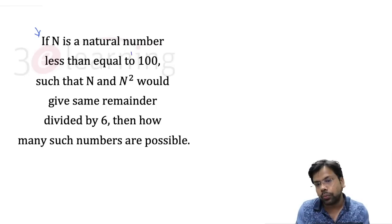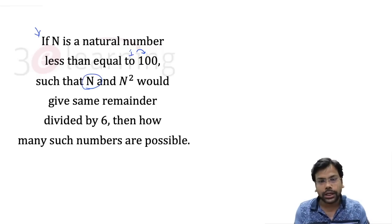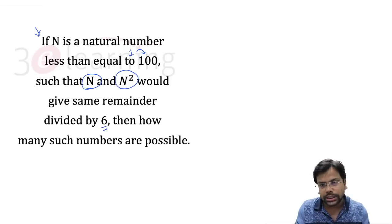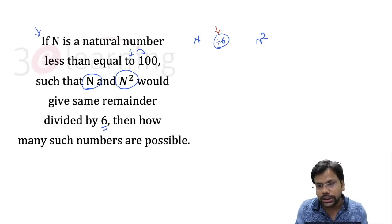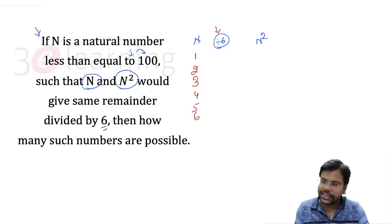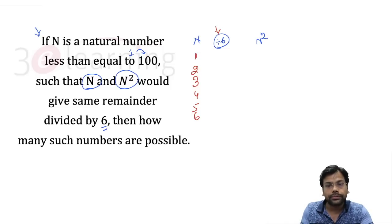The question is quite easy. We need to work on 1 to 100 inclusive, finding when n and n² divided by 6 give the same remainder. We just need to work on the numbers 1, 2, 3, 4, 5, 6 — only these six numbers.